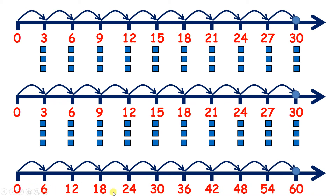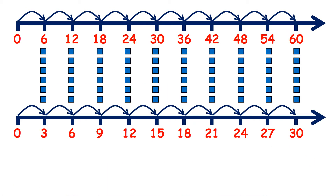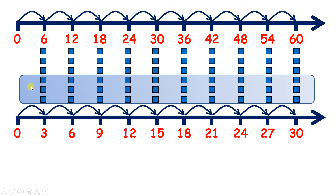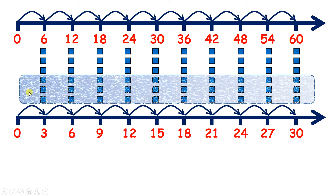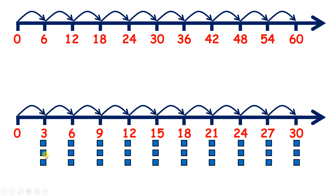On the bottom line we have our six times table, and we can say that we got our six times table by doubling our three times table. Here on the top line we have our six times table. I've circled half of the blocks, so the same number of blocks are circled as not circled. If we get rid of the blocks that are circled, we can see that we have our three times table — so we got our three times table by halving our six times table.